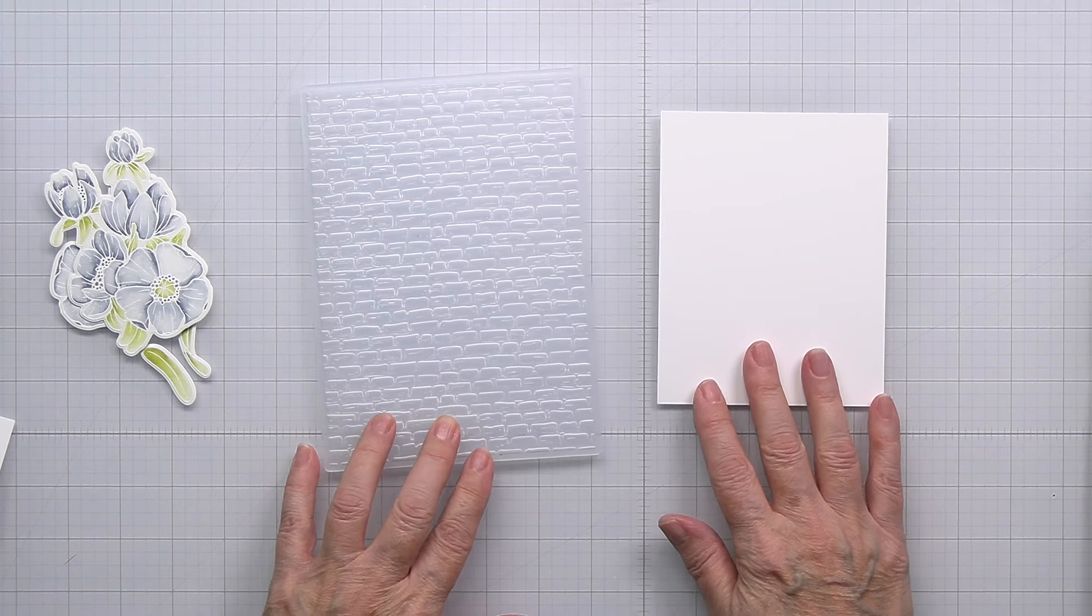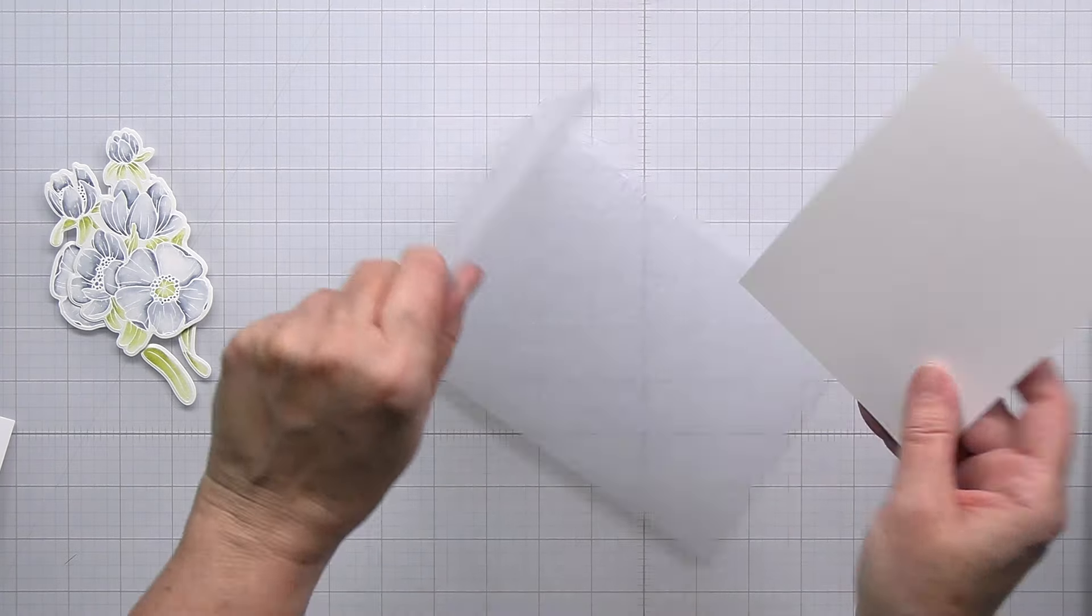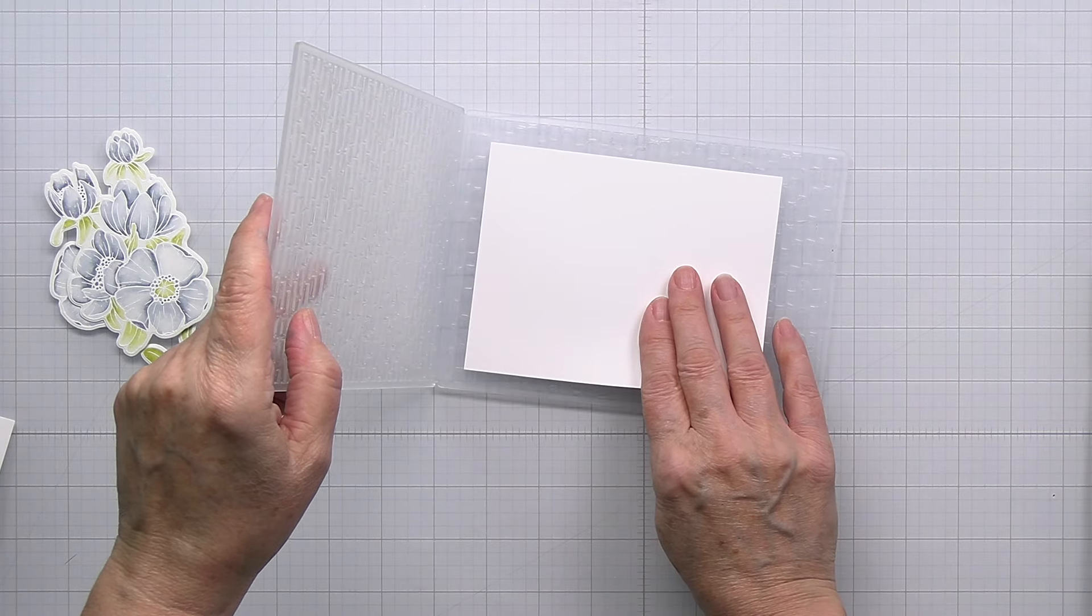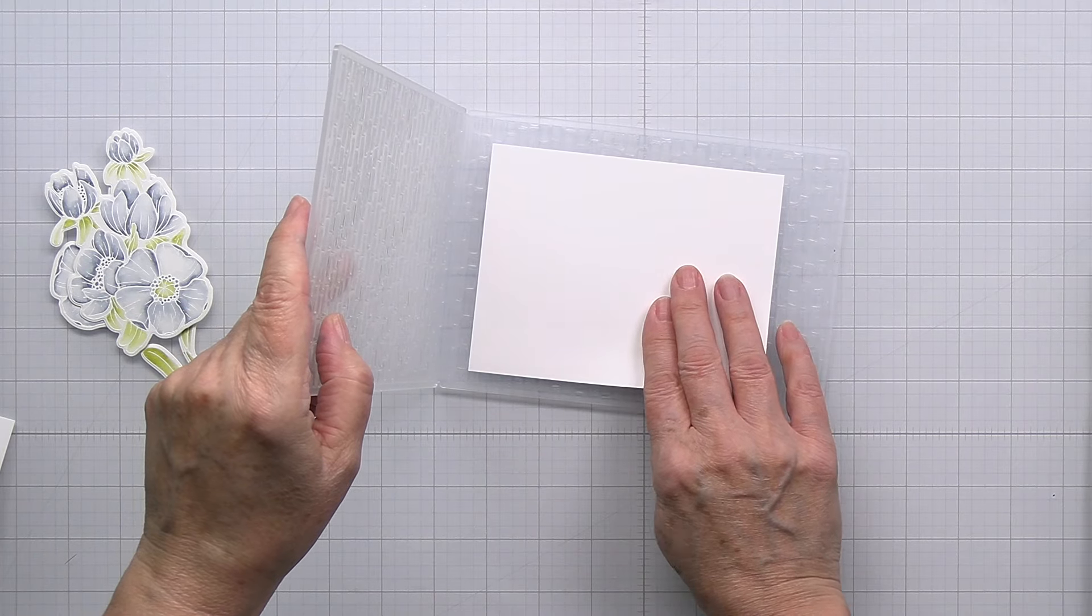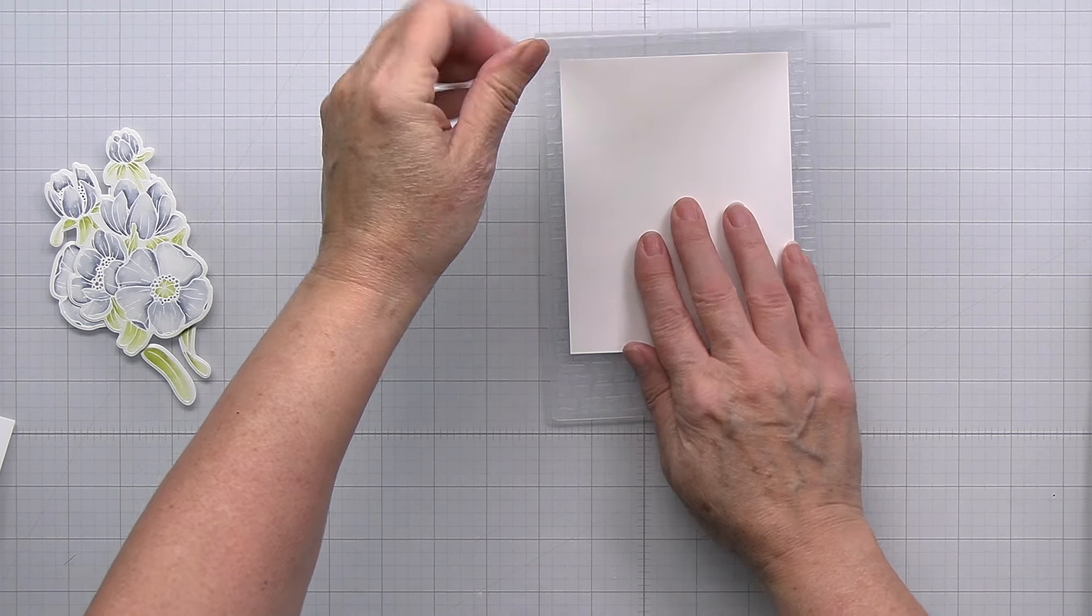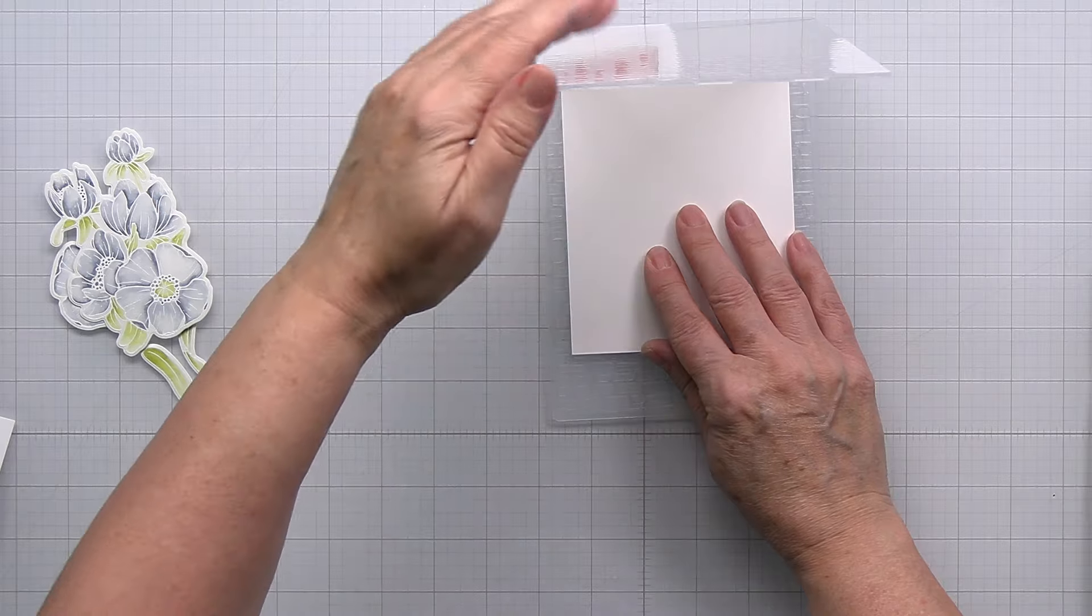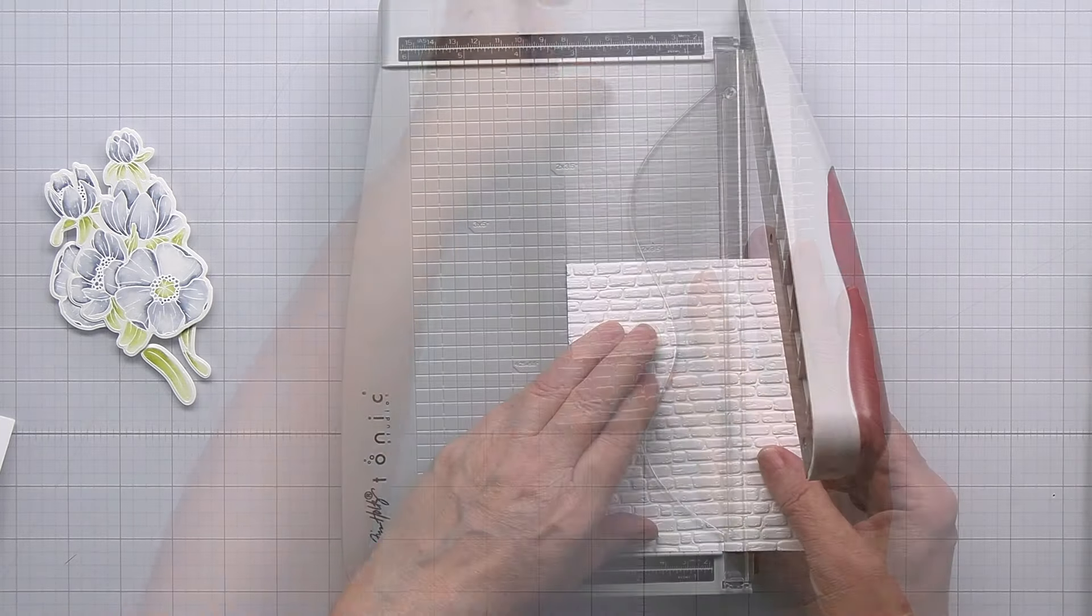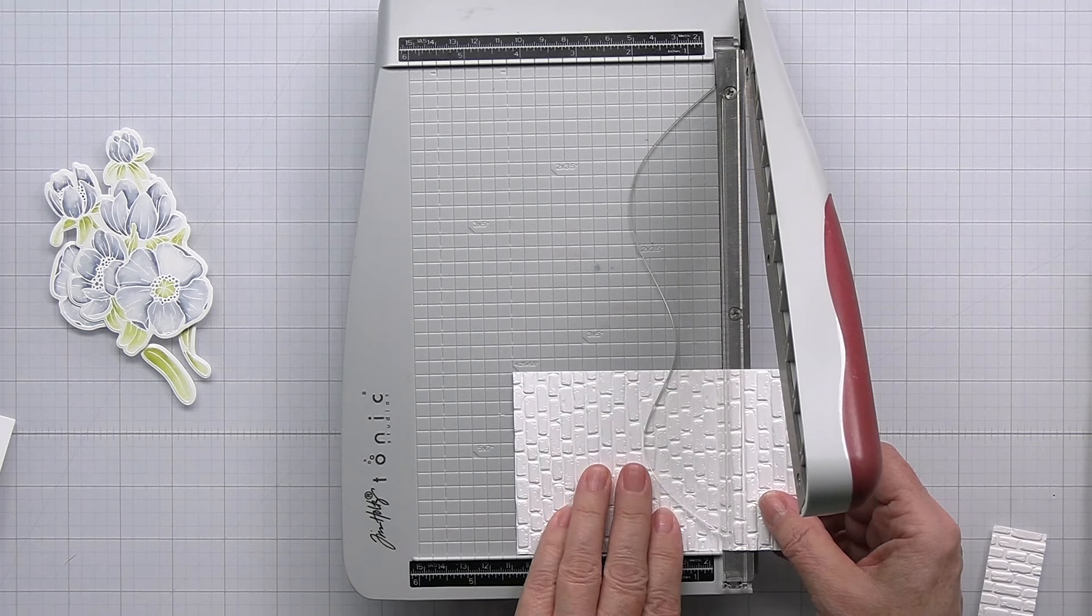Now this is the new 3D brick embossing folder from Honey Bee and the Cozy Christmas collection. I'm going to just take my white piece of cardstock here and run that through this 3D embossing folder with my die cutting machine and that's going to give me just a really great brick background for my florals.